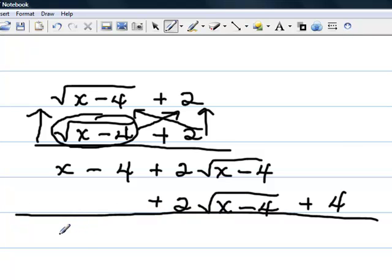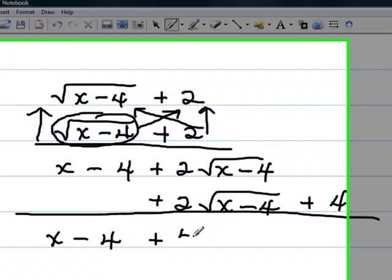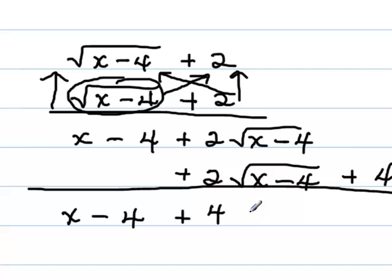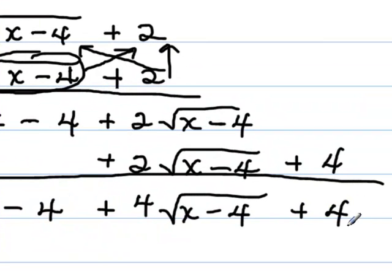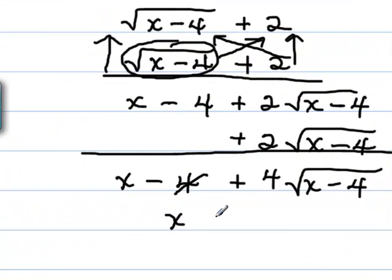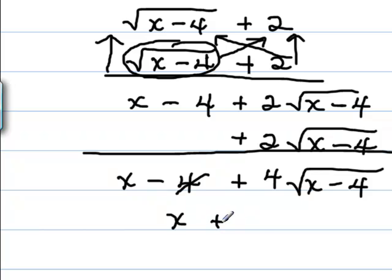So we need to combine all of our like terms just like we would in any other algebra. These are alike, so we're going to add the numbers and carry the radical, just like if this had been 2x plus 2x. Now we see here we have a plus 4 and a minus 4, so they cancel each other out. So our final expression is x plus 4 times the square root of x minus 4.